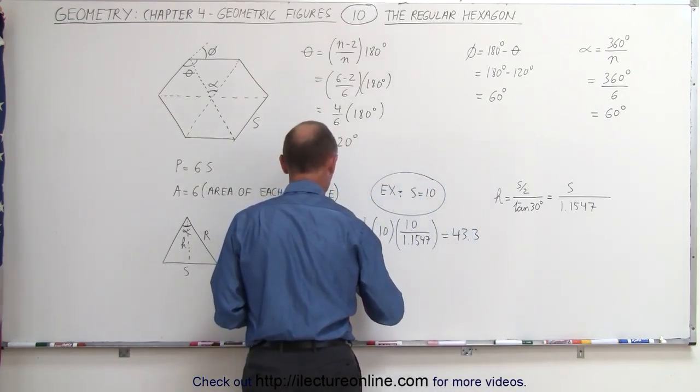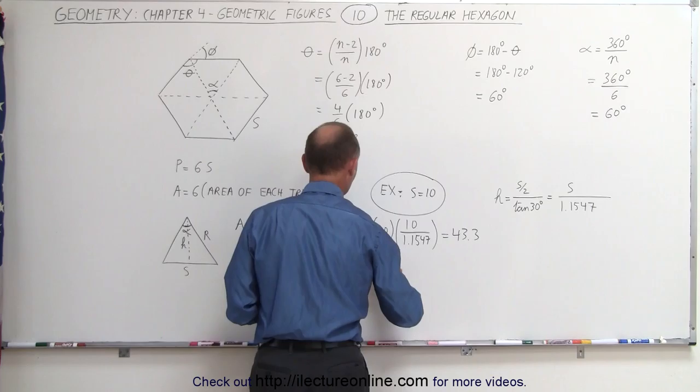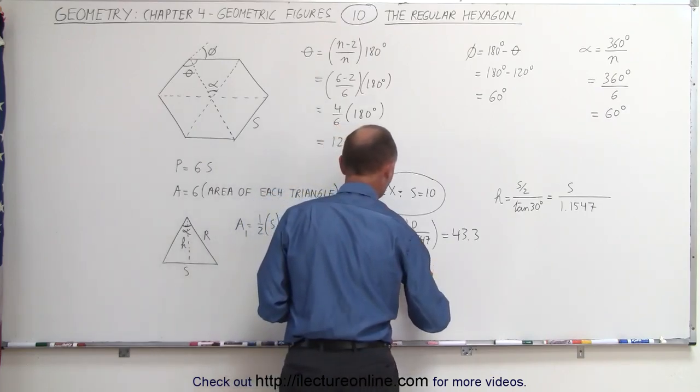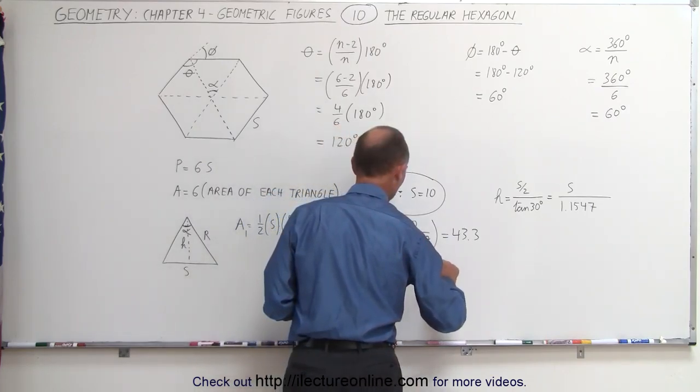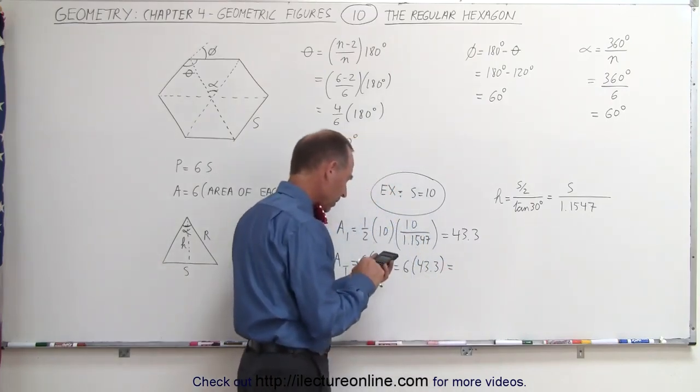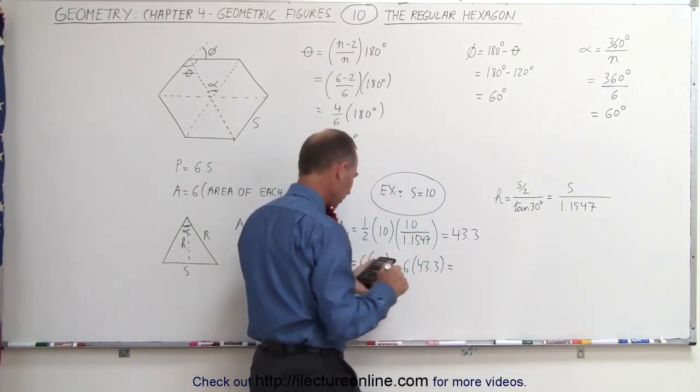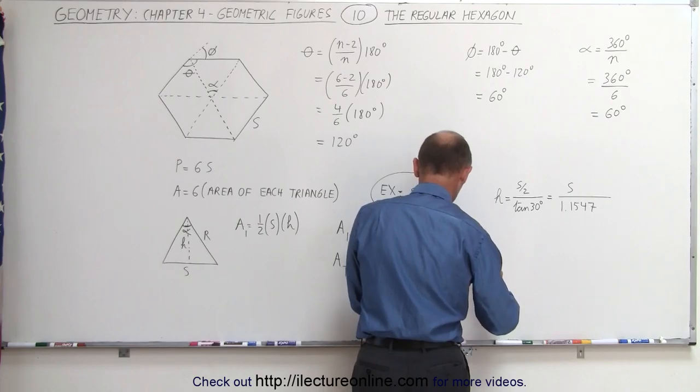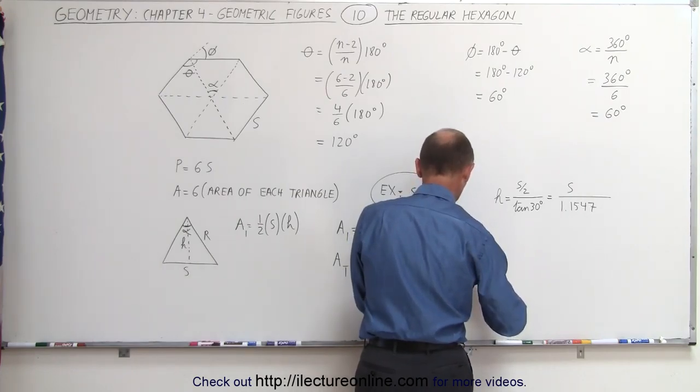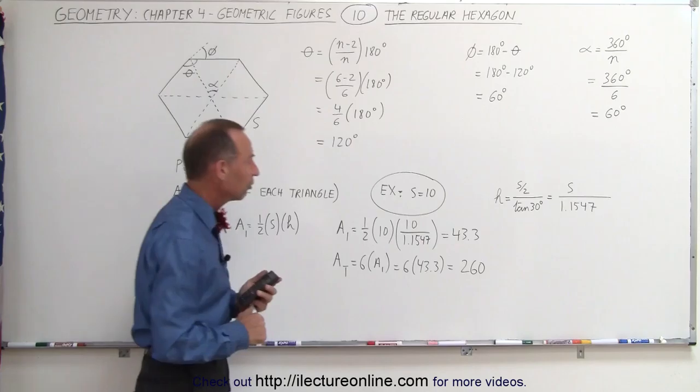Area total, which would be six times the area of each triangle, which is equal to 6 times 43.3. And that's going to be equal to times 6 equals, and that would be, in this case, round it off to three significant figures, 260 square units.